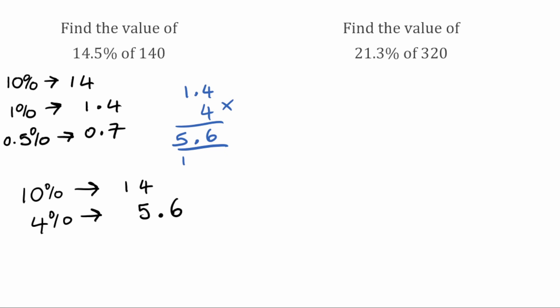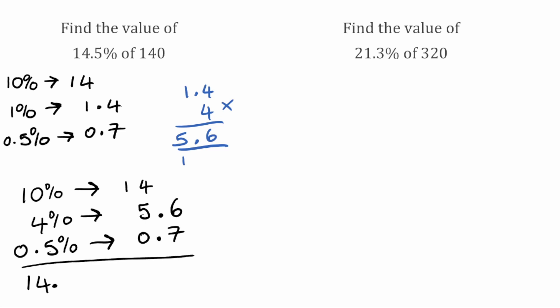We also need the remaining half a percent, which we've already figured out — that's 0.7. So to find 14.5% we add these numbers together: 14.0 add 5.6 add 0.7. Starting on the right: 6 add 7 is 13, so 3 carry 1; 4 add 5 is 9, add 1 is 10, so 0 carry 1; then 1 add the carried 1 gives us 2. So 14.5% of 140 is equal to 20.3.